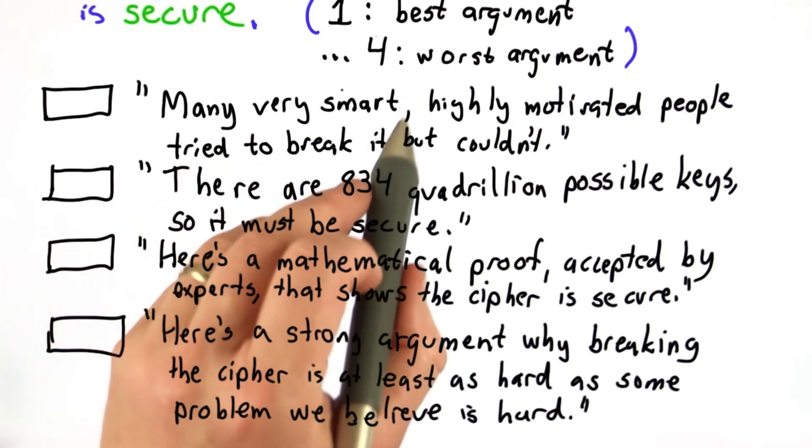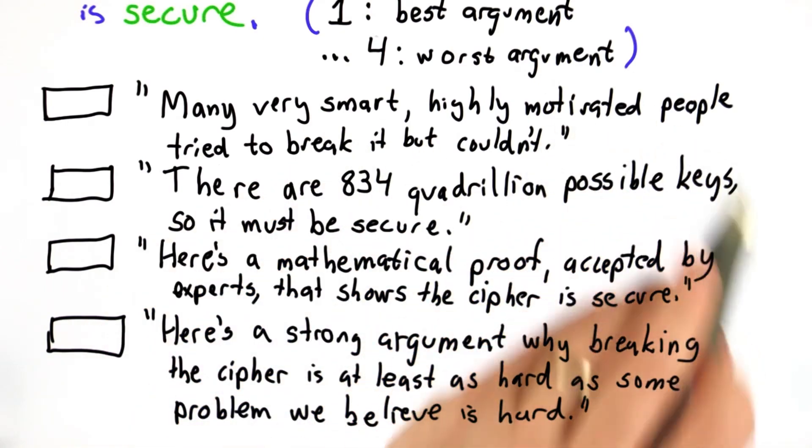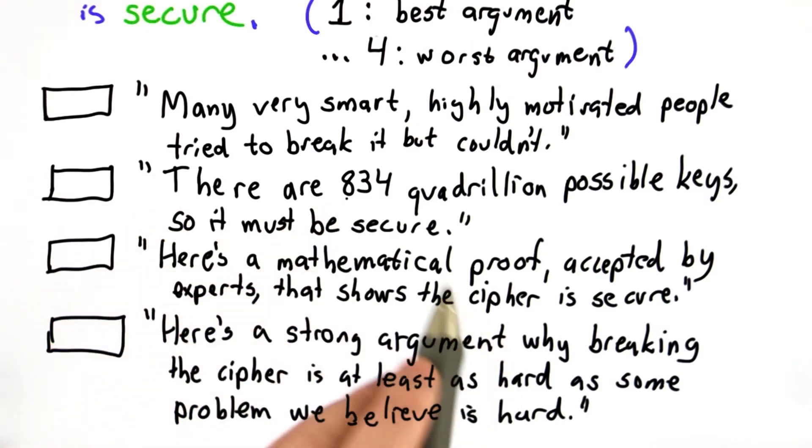The choices are: many very smart people were highly motivated to break the cipher, but were not able to—that means it must be secure. The second choice: there are 834 quadrillion possible keys, so it must be secure.